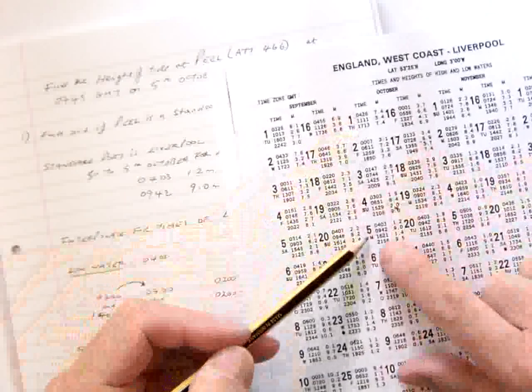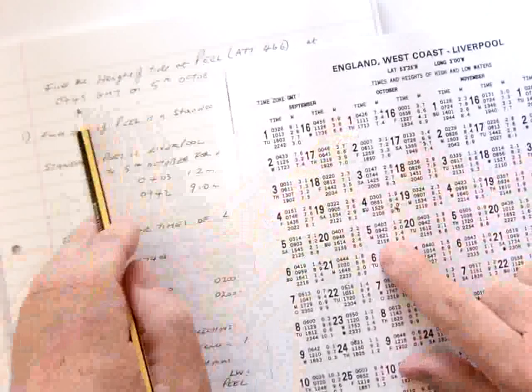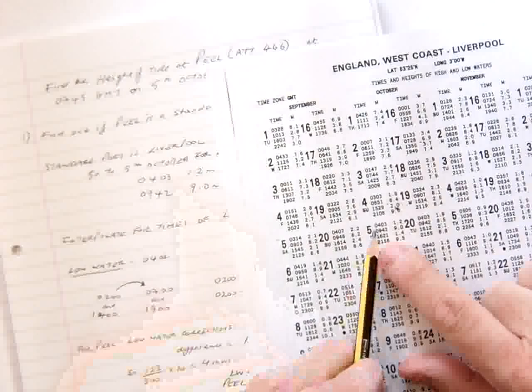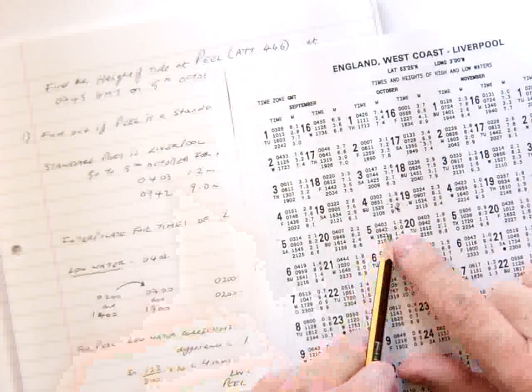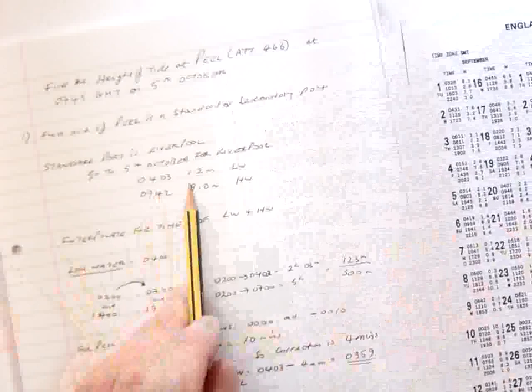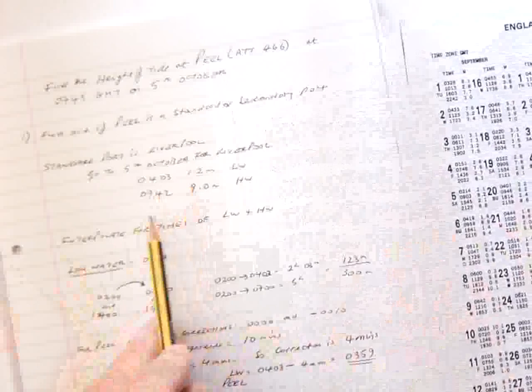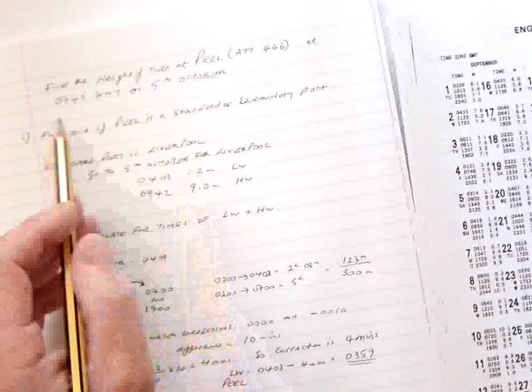Here we are, it's October, 5th of October. And we want the time of 0745 GMT. So it falls between 0403 and 0942. And they're the two heights. So we've written those down. 0403, 1.2 meters. 0942, 9 meters. So our time of 0745 falls between those two.